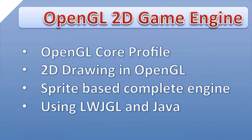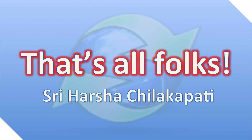So the next thing is an OpenGL 2D game engine series. In this I will be showing how to achieve the OpenGL core profile and 2D drawing. This is mostly focused on 2D, and the complete engine is based on sprites. We are going to make this engine using Java, using LWJGL in the Java programming language. So these are the 2 things I want to notify you through this update video.